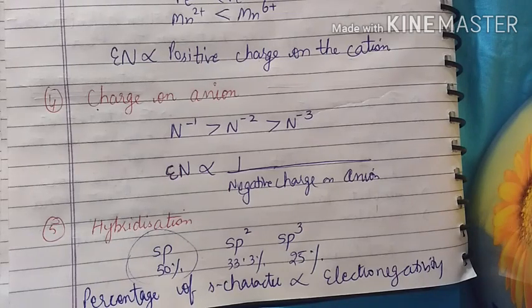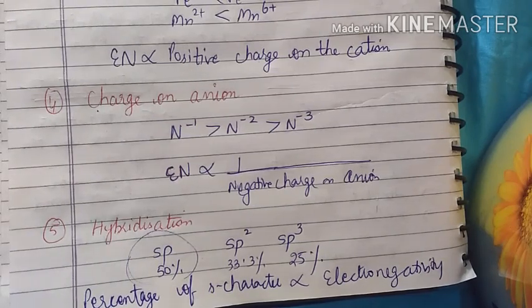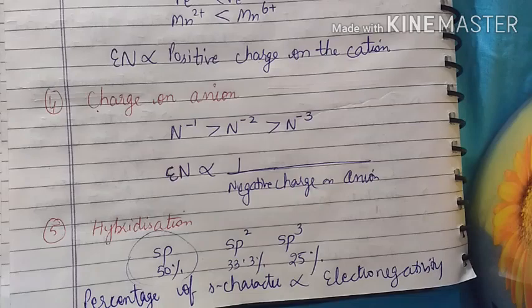Five factors: size of atom, nuclear charge, charge on cation, charge on anion, hybridization. Clear students, thank you.